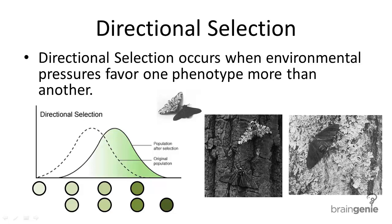Hopefully you remember Darwin's theory of natural selection. If you don't, just recall that Darwin's theory states that the organisms with the traits best suited for their environment are most likely to reproduce and therefore pass on their traits.